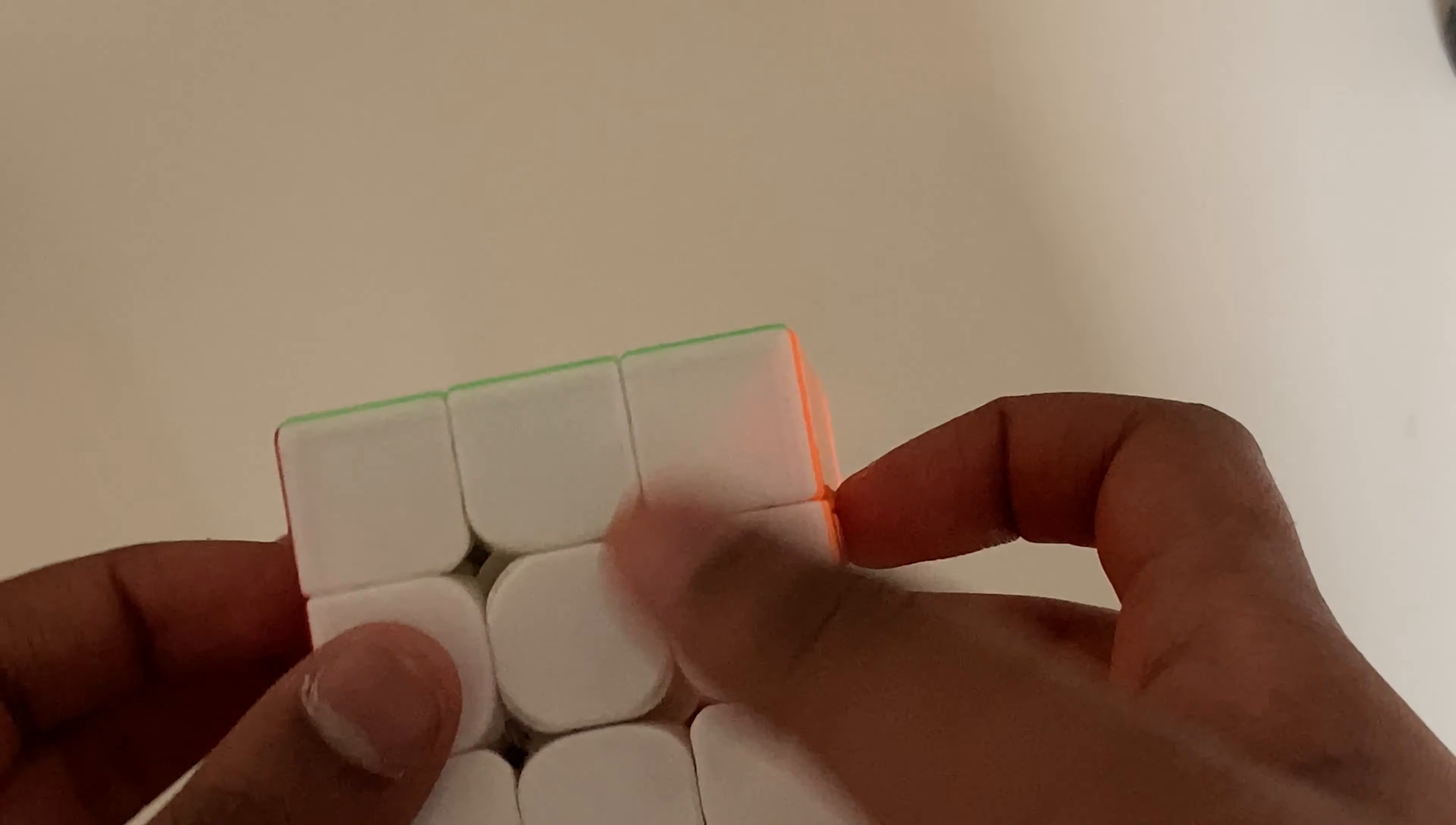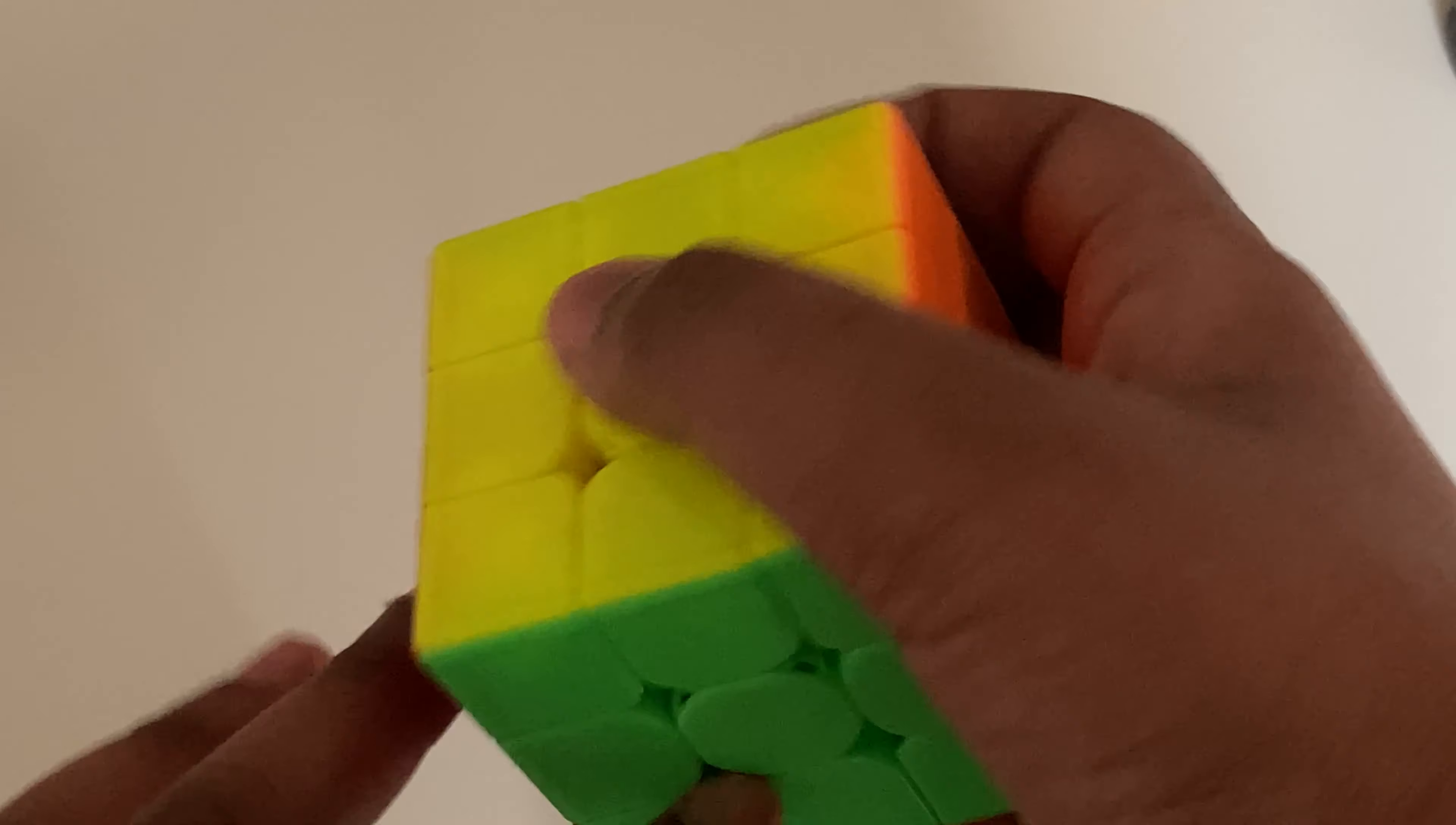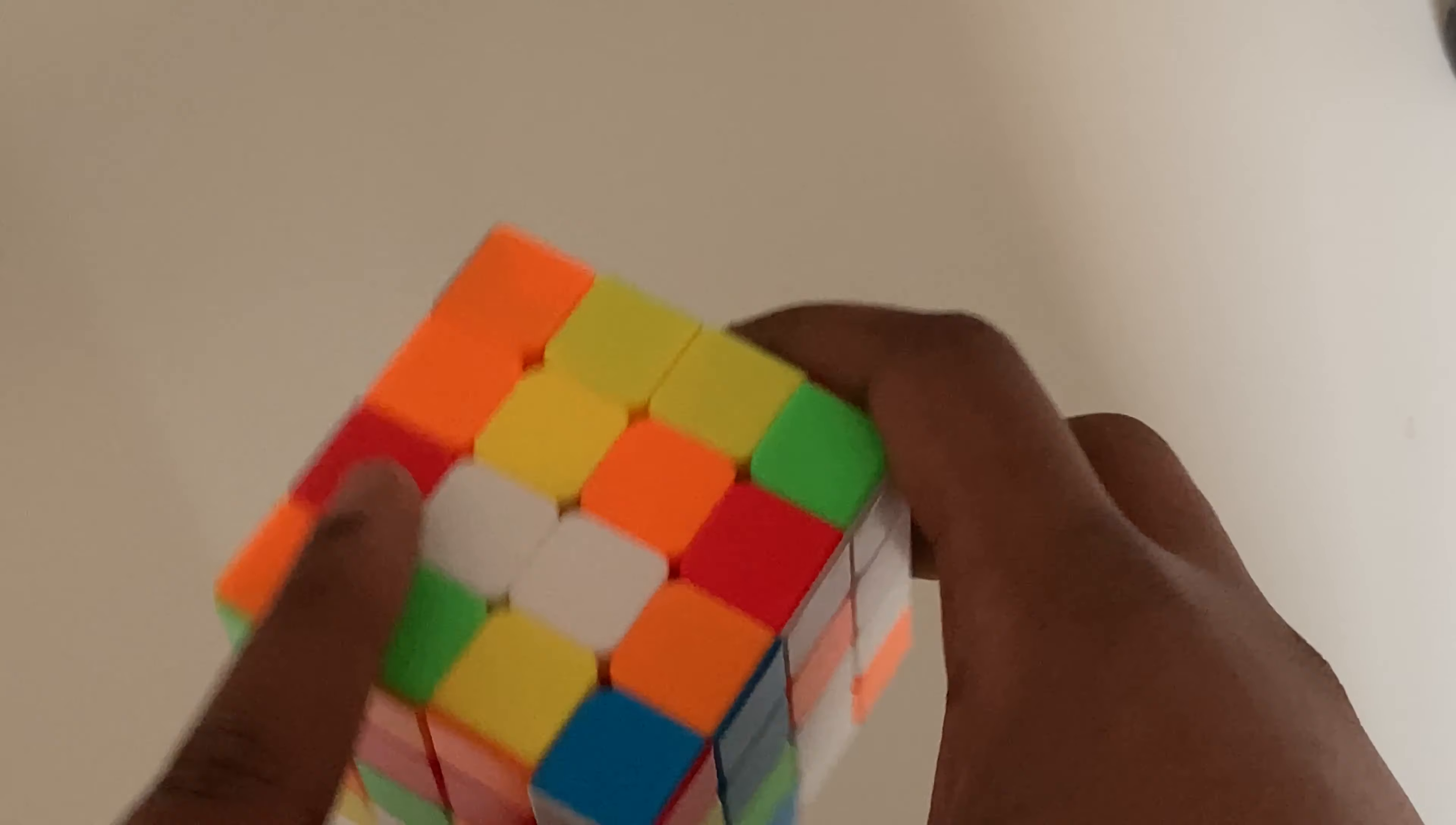Alright, so it's going to be basically like a 3x3, so you have your white here, green, yellow, blue, orange, red, but on this it doesn't have that so we have to manually make them.